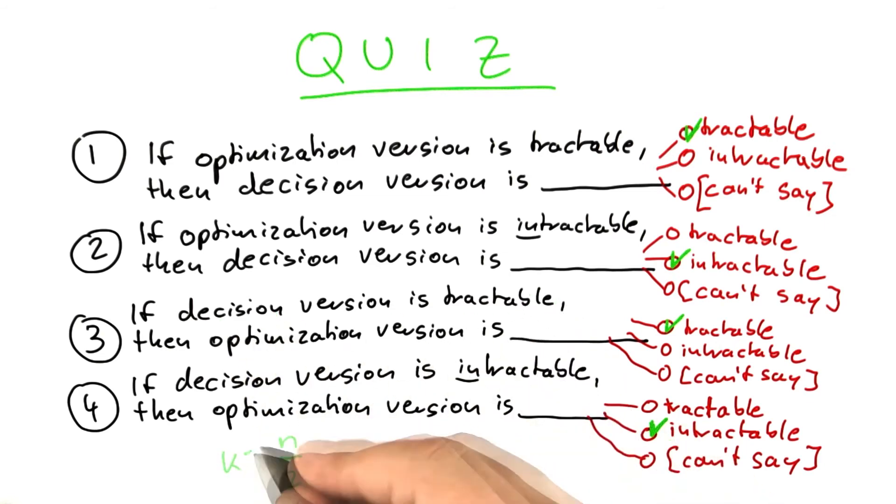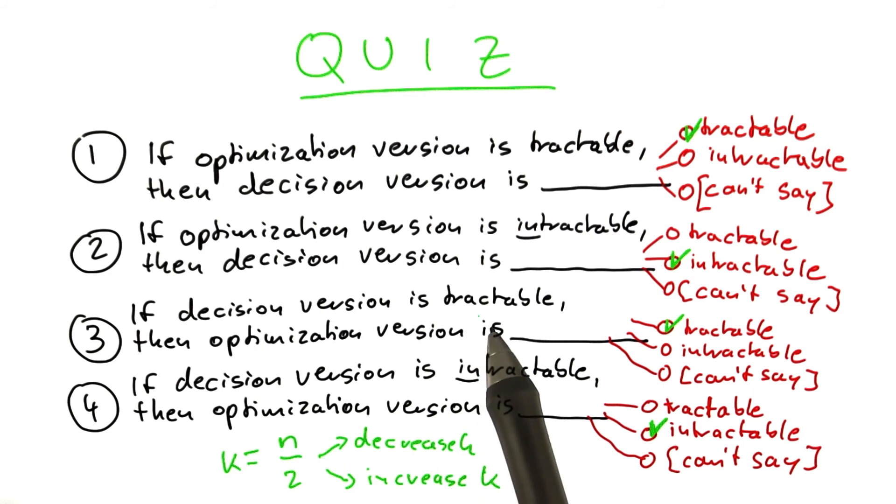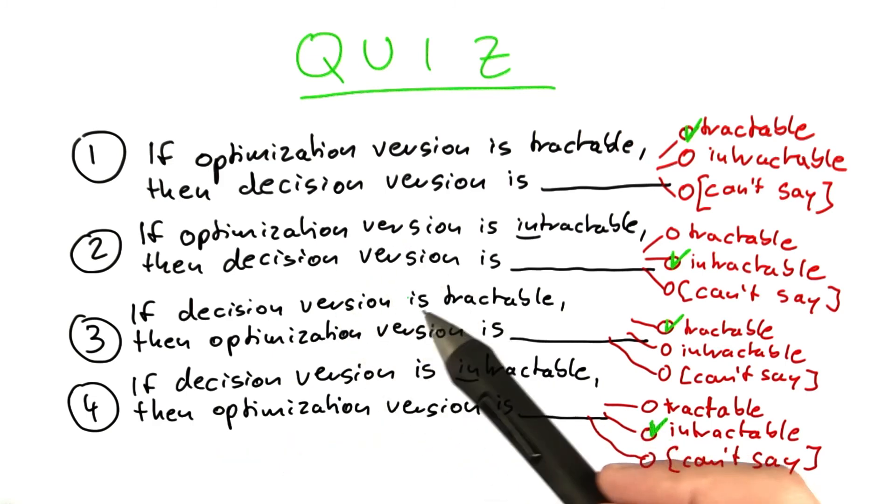say, for n/2 as the value k you're looking for, and see if you can find a solution of this size. If that is the case, you can decrease k. If you cannot find a solution that small, then you have to increase k. By solving the decision version often enough, searching for that optimum k,